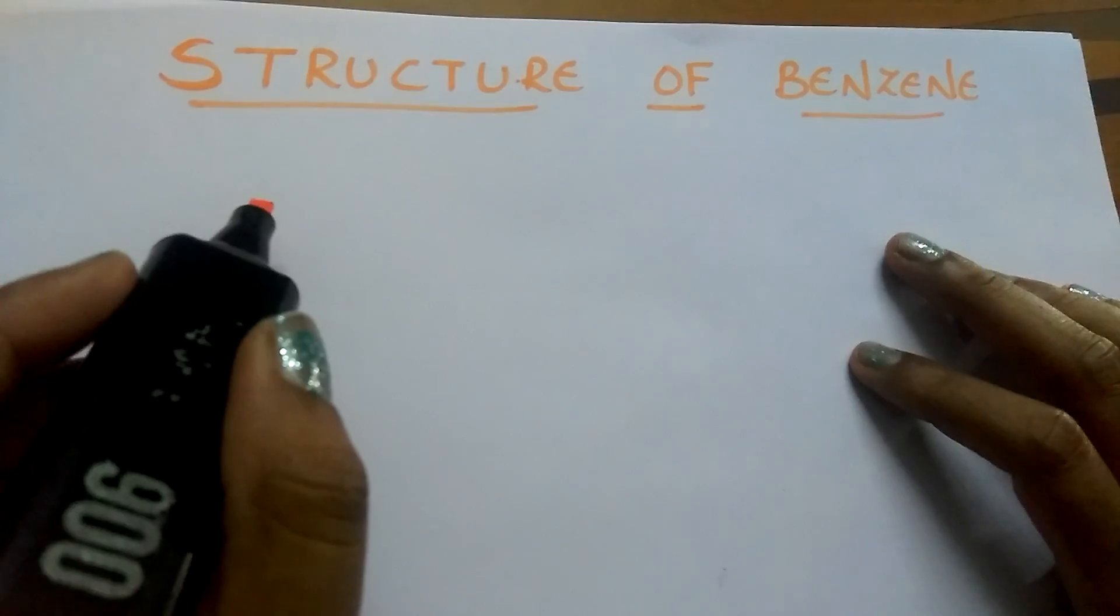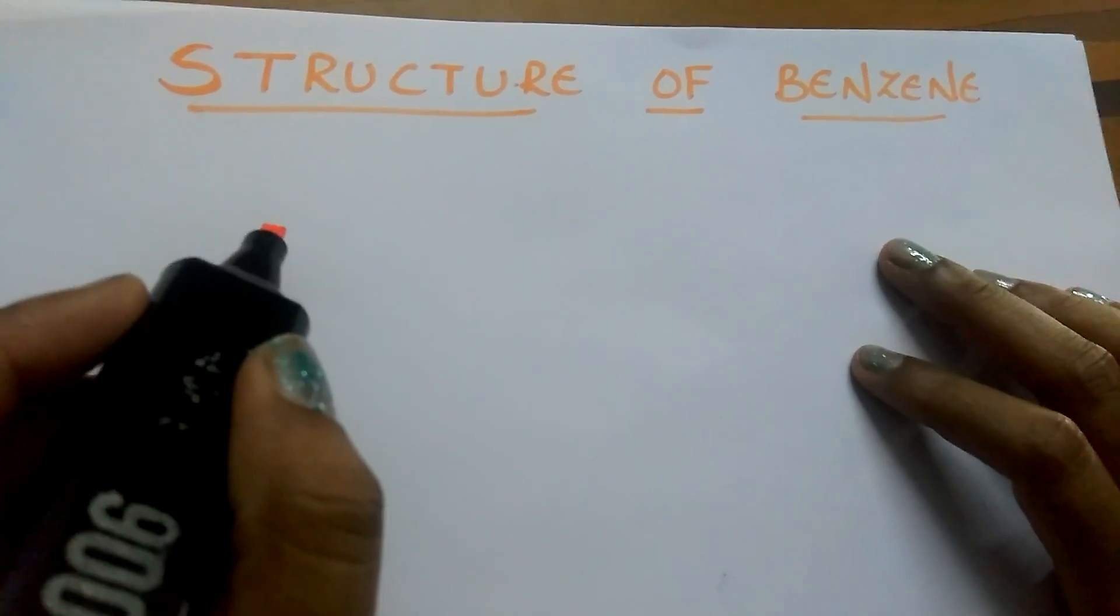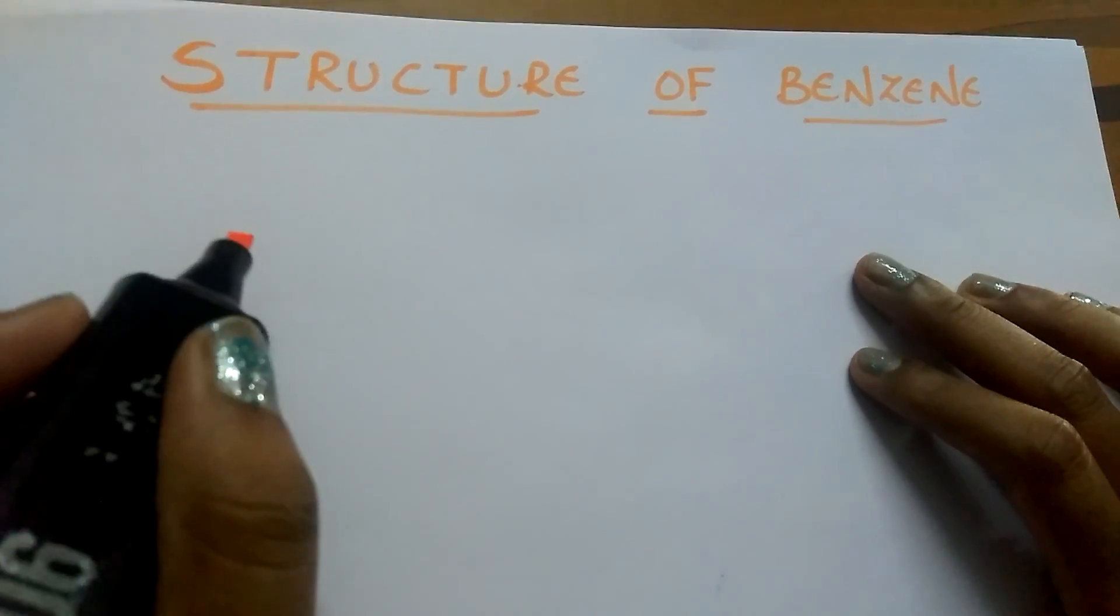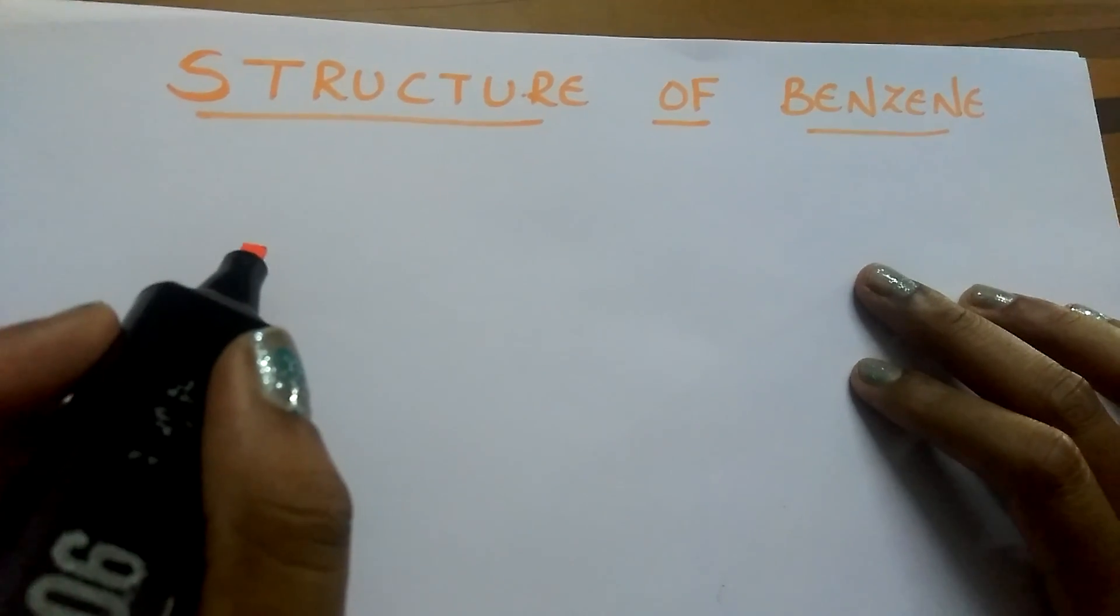Many scientists tried to give the structure for benzene linearly but they failed because of the lot of unsaturation present in the benzene.